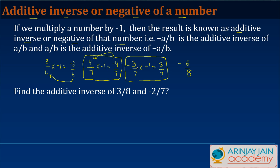So what we learn here is that for a positive number its additive inverse is going to be negative, whereas for a negative number its additive inverse is going to be positive, the values remaining the same in both cases.